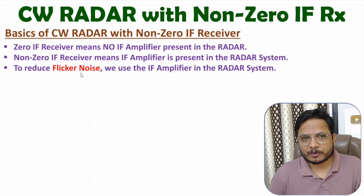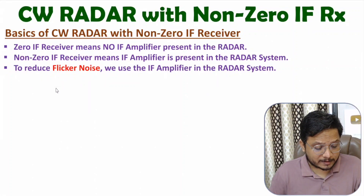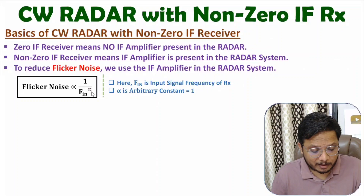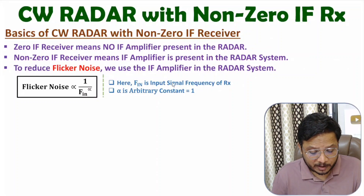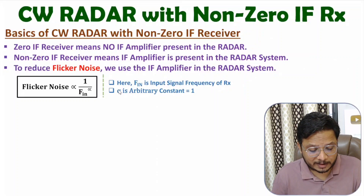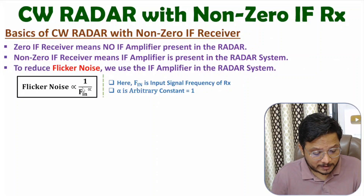Let me explain how. Flicker noise is proportional to 1 divided by input frequency to the power alpha, where alpha is an arbitrary constant and the input frequency is the input frequency signal of the receiver. So flicker noise is inversely proportional to input frequency — that is, if you consider alpha equals 1, flicker noise is inversely proportional to frequency.